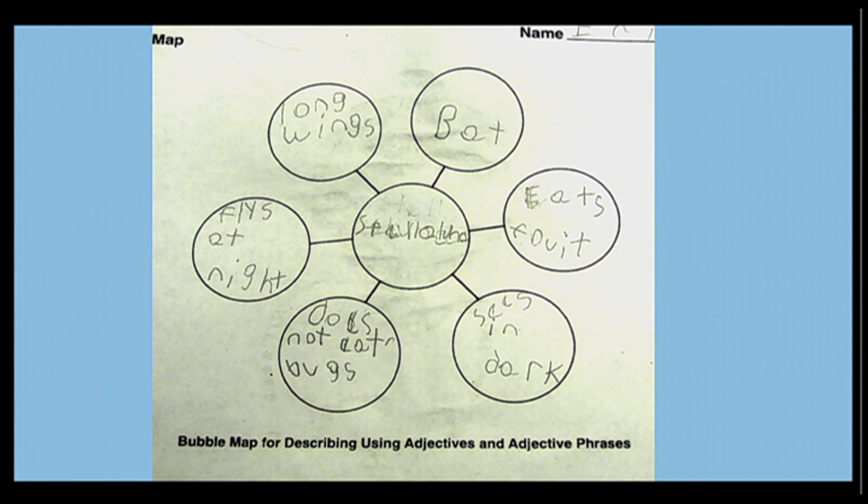she flies at night, she eats fruit, she has long wings. And so that's a pretty good analog lesson where the students are actually writing with pen or pencil. They're just filling in the blanks. So this is a bubble map.